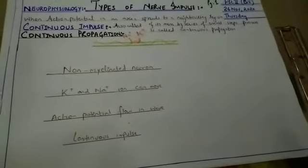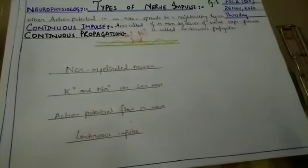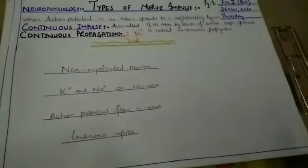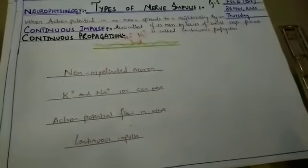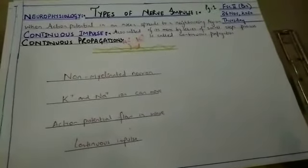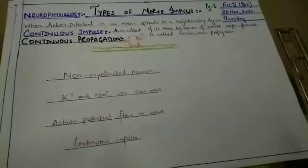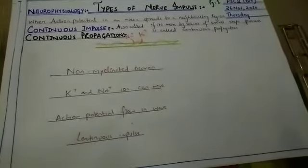कोई myelin sheet नहीं है, कोई Schwann cells नहीं है, तो यहाँ पर कोई भी ऐसा part नहीं है neuron की upper, जो के as a insulating material act करें. यहाँ पर overall the length neuron का conduction present है.